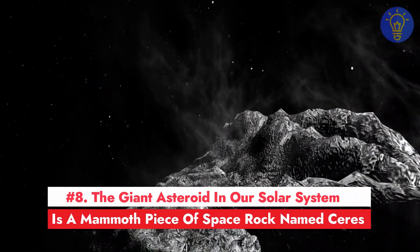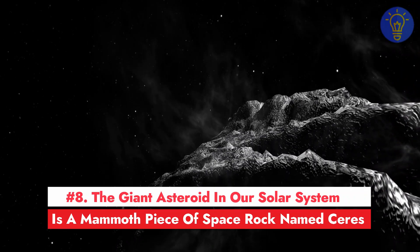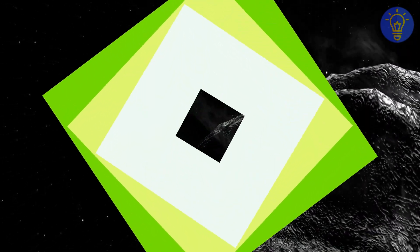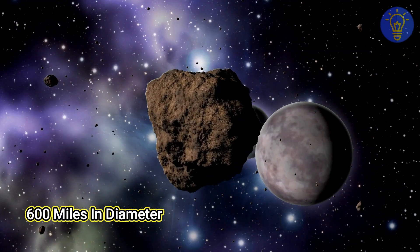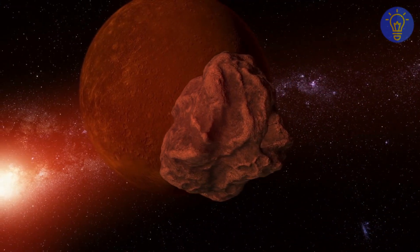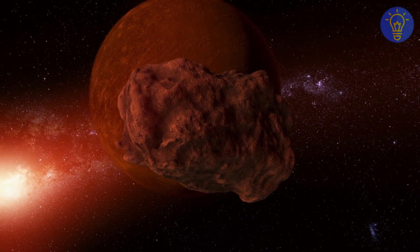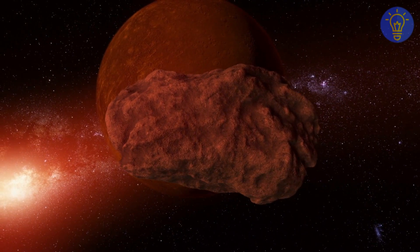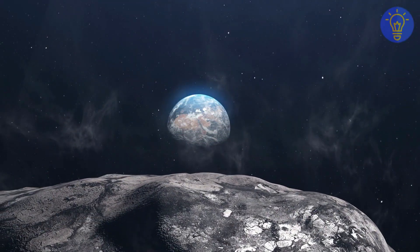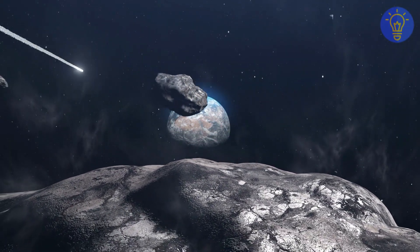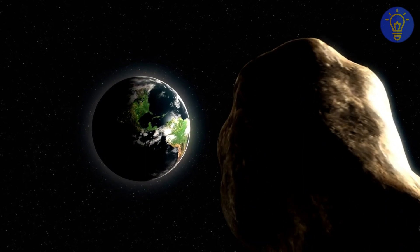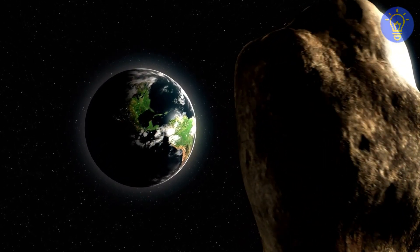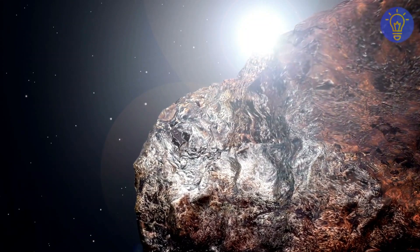Number 8. The giant asteroid in our solar system is a mammoth piece of space rock named Ceres. The asteroid, sometimes known as a dwarf planet, is almost 600 miles in diameter. It's the largest in the asteroid belt between Mars and Jupiter and accounts for a third of the belt's mass. Ceres' surface area is approximately equal to the land area of India or Argentina. The uncrewed spacecraft Dawn just finished its mission orbiting Ceres and helping us transform our understanding of the world.